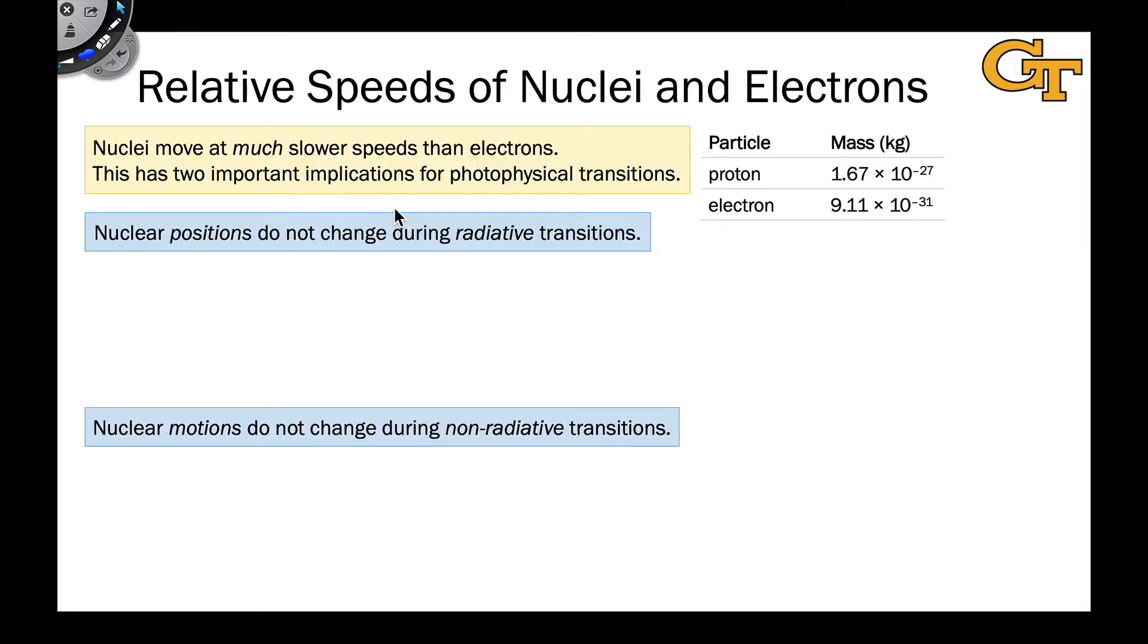A little bit of a preamble before we get to that about the relative speeds of nuclei and electrons. If we look at the masses of the proton and electron, we understand immediately why electrons move so much faster than protons. They're much, much lighter. And so nuclear speeds are much slower than those of electrons,